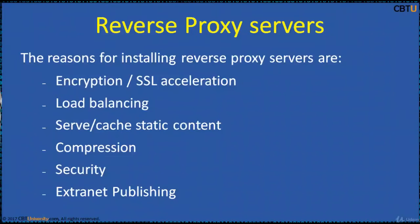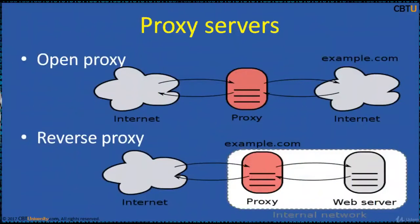A reverse proxy server facing the internet can be used to communicate to a firewall server internally within an organization, providing external access to some functions while keeping the servers behind the firewalls. An open proxy is a forwarding server accessible by any internet user. A reverse proxy appears to clients as an ordinary server; requests are forwarded to one or more proxy servers, and the response is returned as if it came directly from the original server, leaving the client with no knowledge of the origin.